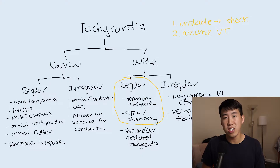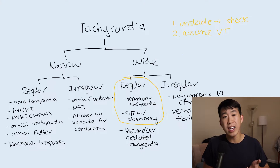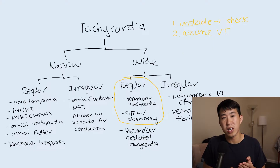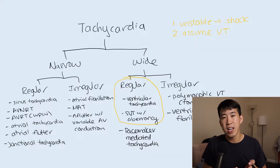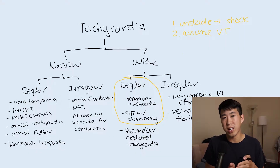One of the first things to consider is the patient and their history. Patients who are older than 35, have previous cardiac conditions, any history of MI or cardiac ischemia, or have an ICD placed — these are telltale signs that it's much more likely to be VT rather than SVT with aberrancy. On the other hand, if the patient is relatively healthy, under 35, and has never had any cardiac problems, you might consider SVT with aberrancy. But even then, it's always safer to assume VT. SVT with aberrancy is typically seen in healthy young patients.